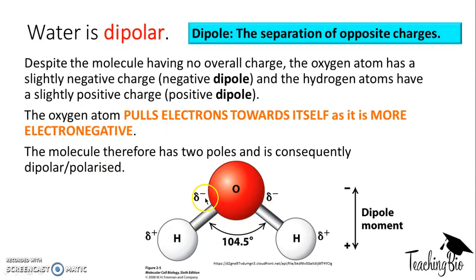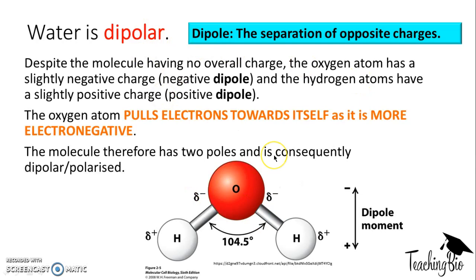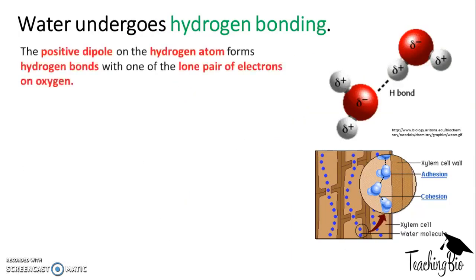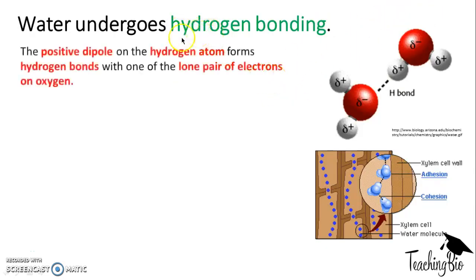Dipolar means two dipoles. Water also has two lone pairs as well as two bonding pairs. From GCSE you probably know the dot-and-cross diagram of water. It's these two lone pairs, coupled with the dipolar nature of water, that allows hydrogen bonding. The positive dipole on the hydrogen atom forms a hydrogen bond with the lone pair of electrons on the oxygen atom. So if another hydrogen comes along, it would hydrogen bond to the lone pair. Hydrogen bonding goes from the hydrogen to the oxygen lone pair.